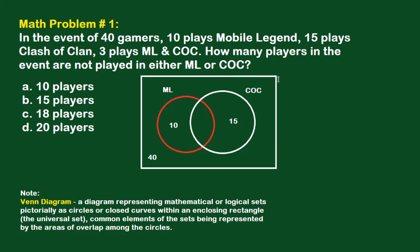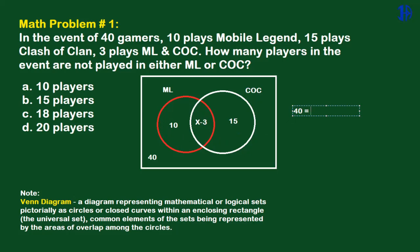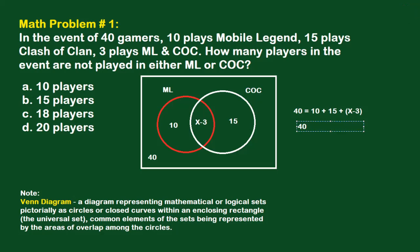This is the trick in solving this kind of problem. We place in the middle, between ML and CoC in the drawing, the value x minus 3, where x represents the players who are not playing either ML or CoC. So our equation becomes: 40, the total number of players, equals 10 plus 15, plus the quantity x minus 3.